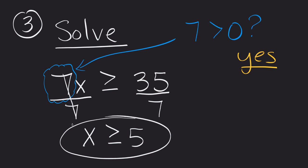So as long as the c value is greater than 0, the inequality will remain exactly the way we see it.